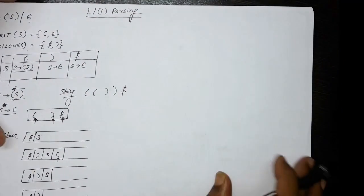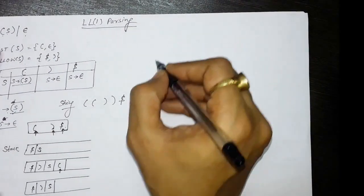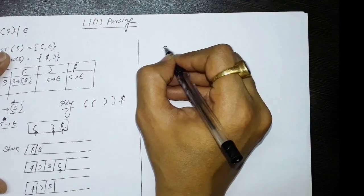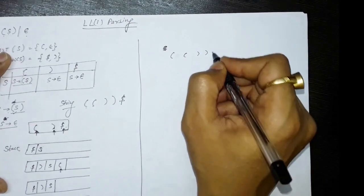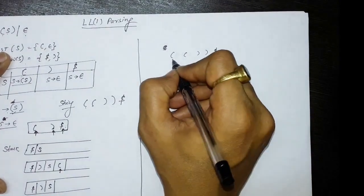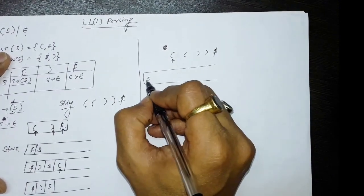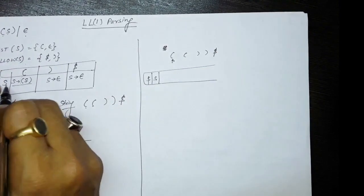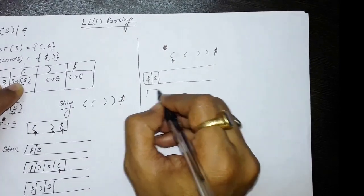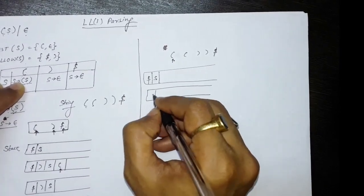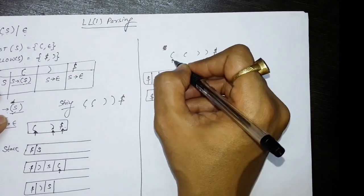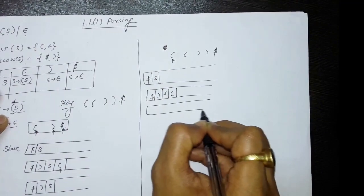Now let's take another example to make LL1 parsing clearer. The string is: opening bracket, opening bracket, closing bracket, closing bracket, followed by dollar. Take a stack with dollar and start symbol S. S on opening bracket gives S → opening bracket S closing bracket, so replace S with closing bracket, S, opening bracket in reverse. There is a match of opening bracket on stack with opening bracket in input, so pop it.